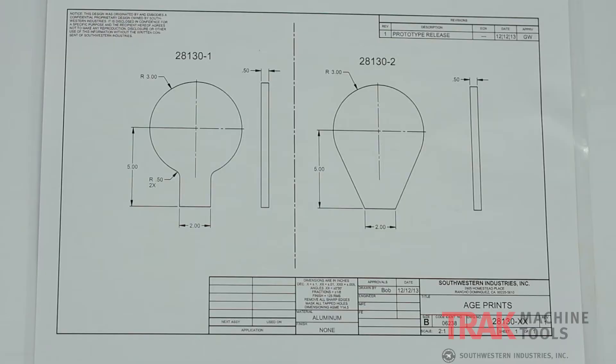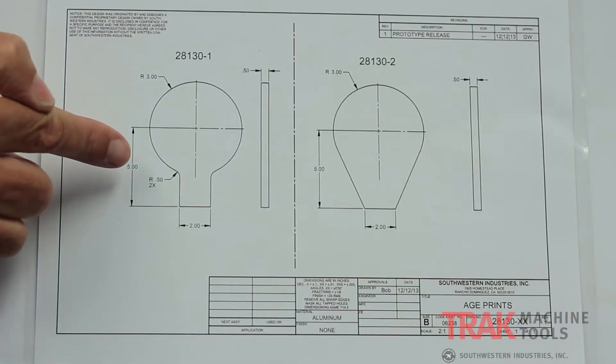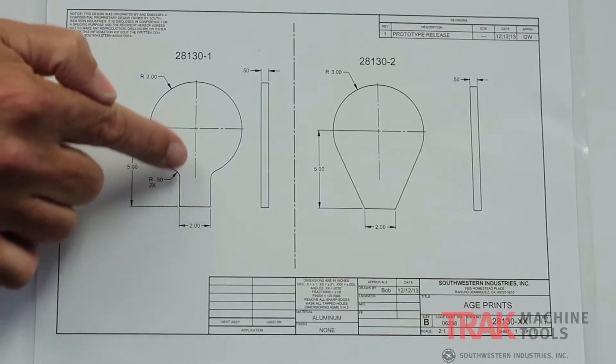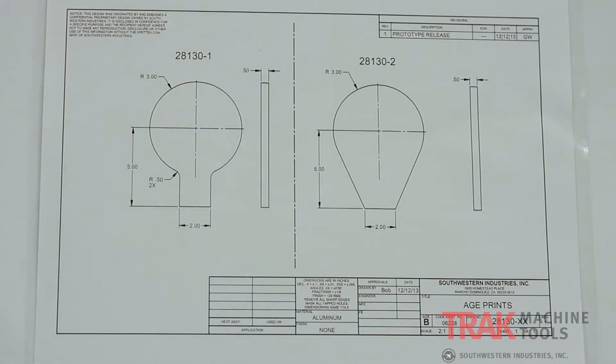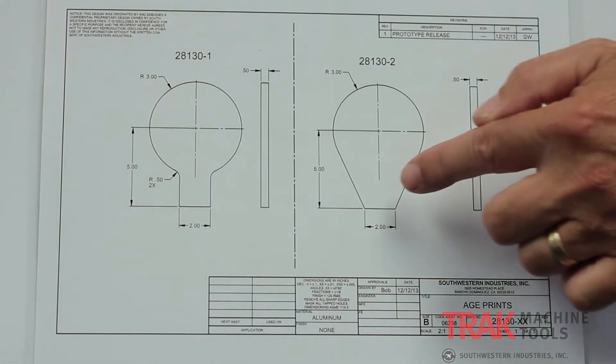We all know what it's like to get a print that's missing a dimension and having to halt what you're doing and go back to the drawing board, call a customer, or pull out a trade book to find a dimension that's not on the print. I have two examples here: one is a part that has a line intersecting an arc, the other has a line tangent to the arc, and I'm going to show you how to program them both using the AGE profile.